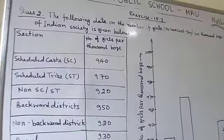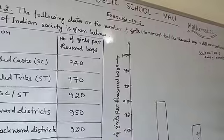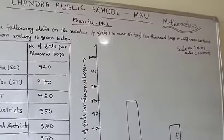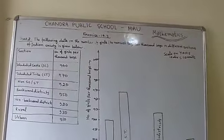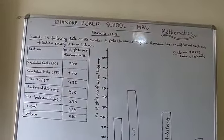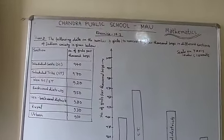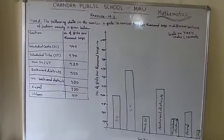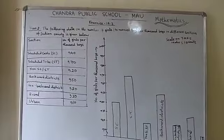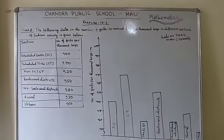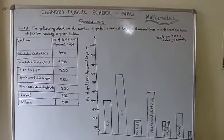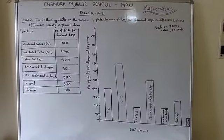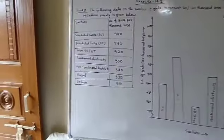In the same question it is asked: discuss what conclusion can be arrived at from the graph. You can conclude that the number of boys is more compared to the number of girls in all the different sections. Write that conclusion in your copy.